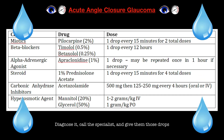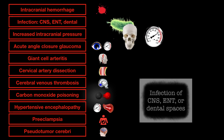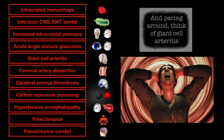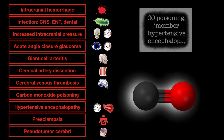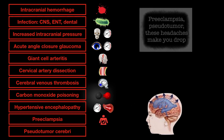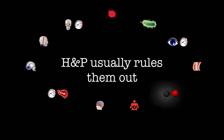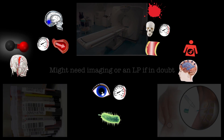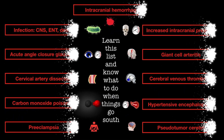I feel pressure over the top — acute angle closure glaucoma, about ready to pop. Diagnose it, call the specialist, and give those drops. Bleeding inside your head — different types of ICH. Infection: CNS, ENT, or dental spaces. Intracranial pressure pushing parts in the wrong places. Intraocular pressure increasing, patients making faces. Giant cell arteritis, dissection in the neck, thrombosis of venous sinus, CO poisoning, hypertensive encephalopathy, preeclampsia, pseudotumor — these headaches make you drop. Headaches have dangerous causes; H&P usually rules them out, might need imaging or an LP if in doubt. Headaches should give providers pauses — think it through before you send them out. Learn this list and know what to do when things go south.